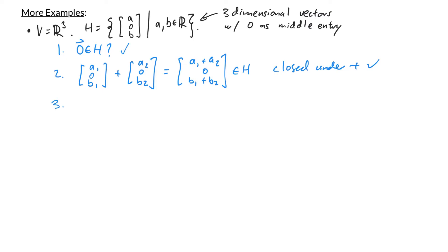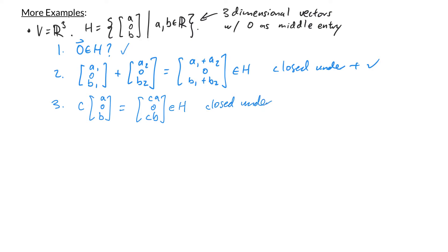Lastly, let's check if H is closed under scalar multiplication. Let C be any scalar and (A, 0, B) be an arbitrary element in H. The product is (CA, 0, CB). Since the product has a zero in the middle entry, it's in H, so H is closed under scalar multiplication. Since all three conditions are satisfied, we conclude that H is a subspace of V — in this case, of R³.